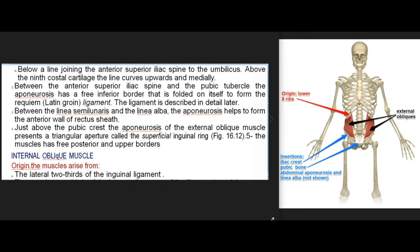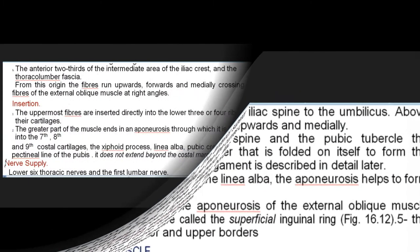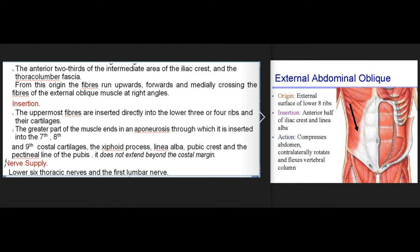Internal oblique muscle. Origin: the muscle arises from the lateral two-thirds of the inguinal ligament, the anterior two-thirds of the intermediate area of the iliac crest, and the thoracolumbar fascia. From this origin the fibers run upwards, forwards, and medially, crossing the fibers of the external oblique muscle at right angles. Insertion: the uppermost fibers are inserted directly into the lower three or four ribs and their cartilages. The greater part of the muscle ends in an aponeurosis through which it is inserted into the 7th, 8th, and 9th costal cartilages, the xiphoid process, linea alba, pubic crest, and the pectineal line of the pubis. Nerve supply: lower six thoracic nerves and the first lumbar nerve.